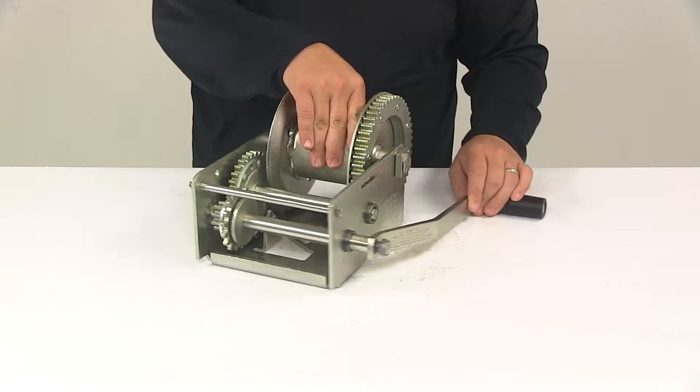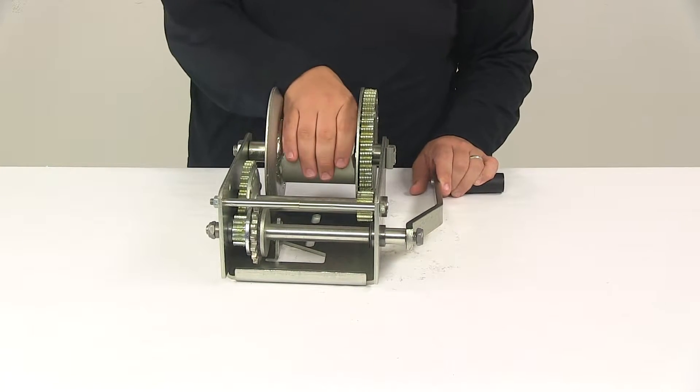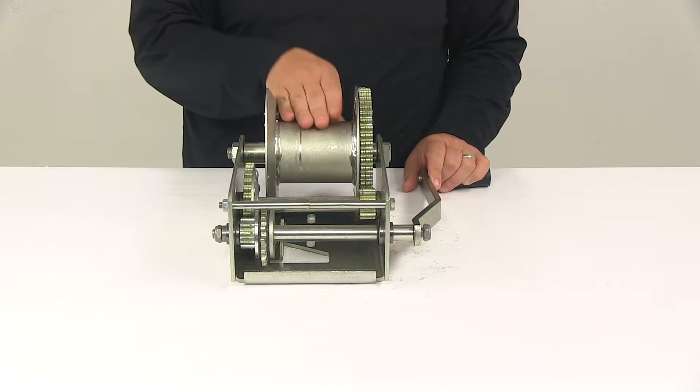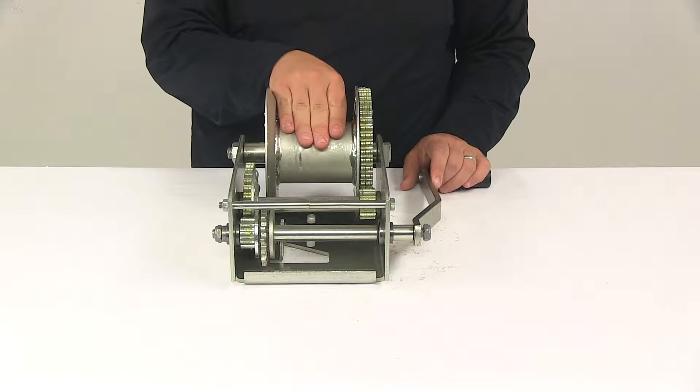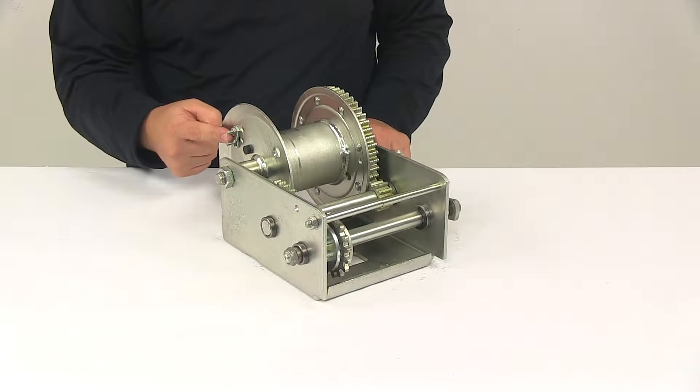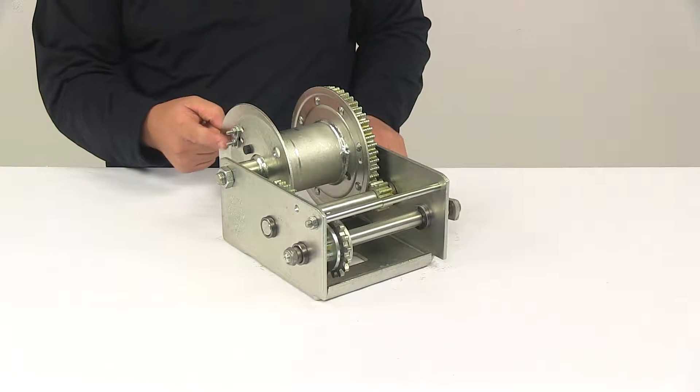The oversized drum hub helps maximize cable life. It is designed for use with aircraft grade cable, and the cable keeper that keeps it attached to the drum is included as well.